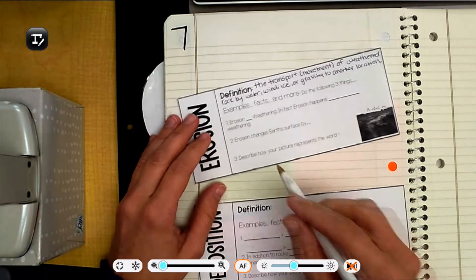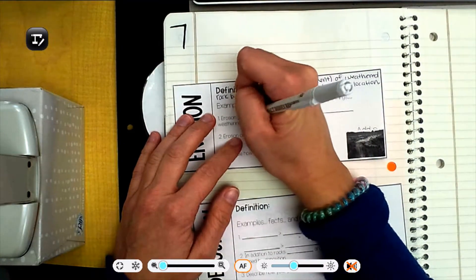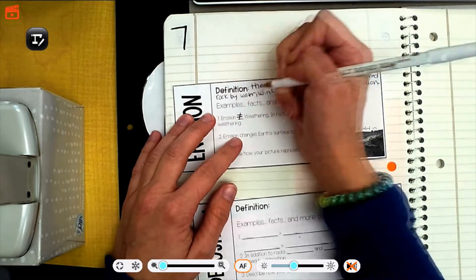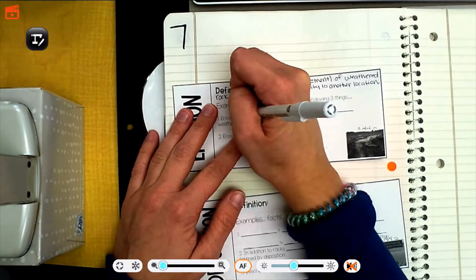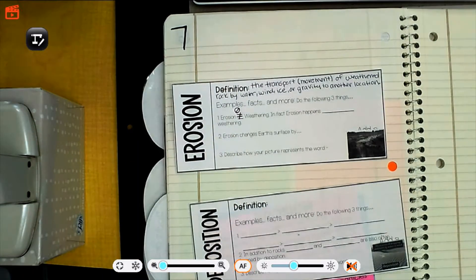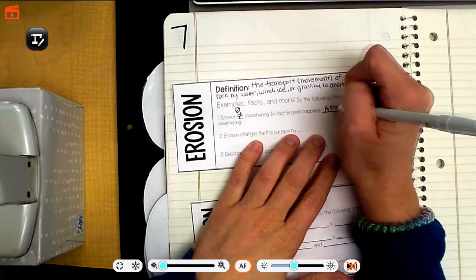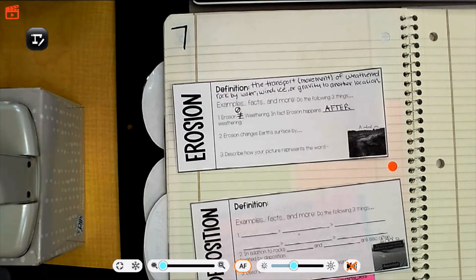So we're going to put a sign here. It's not equal to weathering. A lot of people use the equal sign and put a line through it, or you can write a no sign. A lot of people think that erosion and weathering are the same thing, but they're not. They're two parts of a bigger process. So in fact, erosion happens after, write that in all caps, after. You cannot move the weathered rock unless it's already been weathered or broken down.